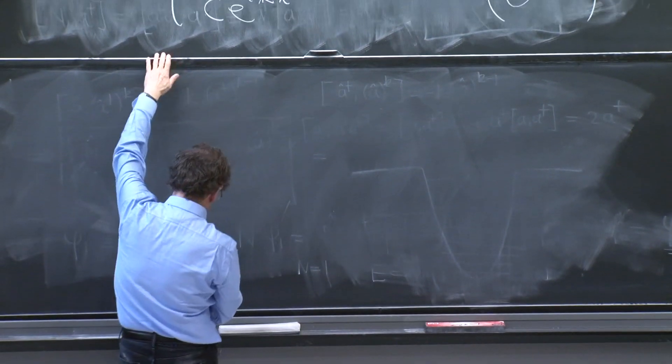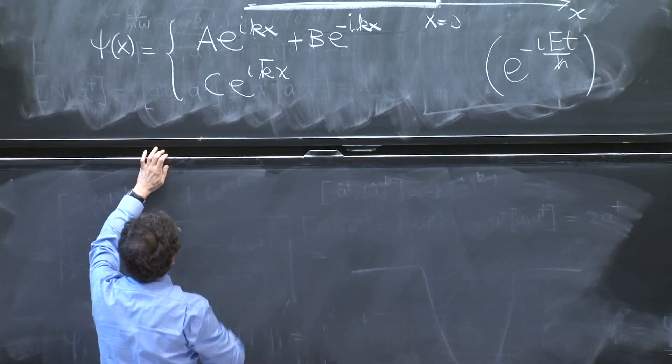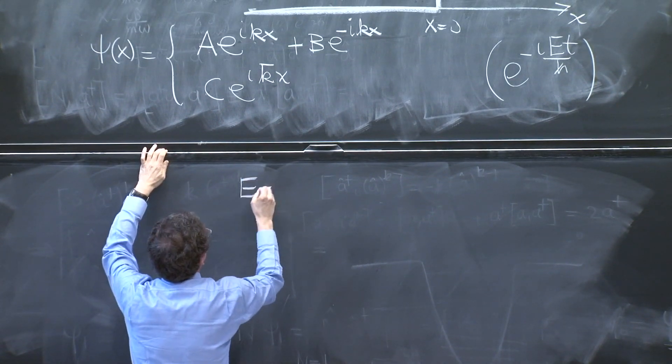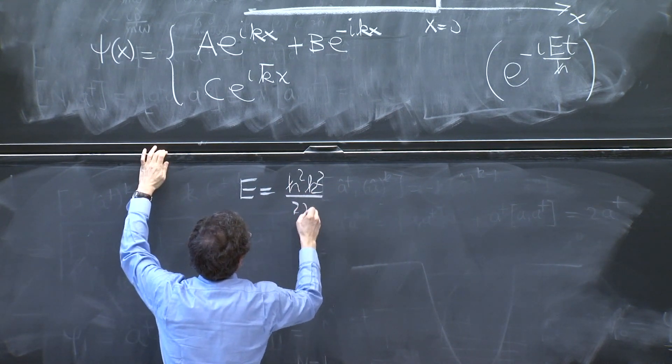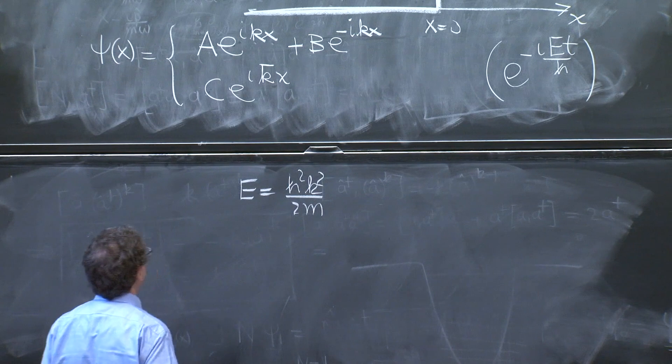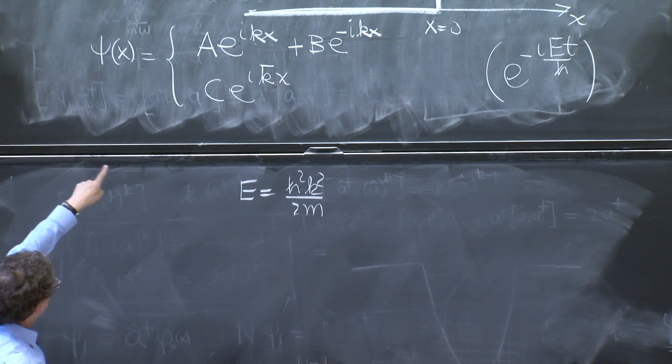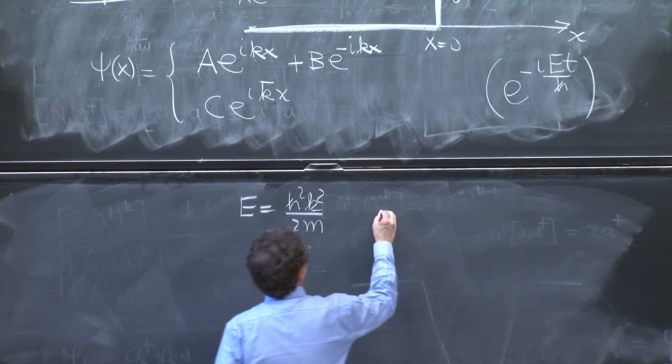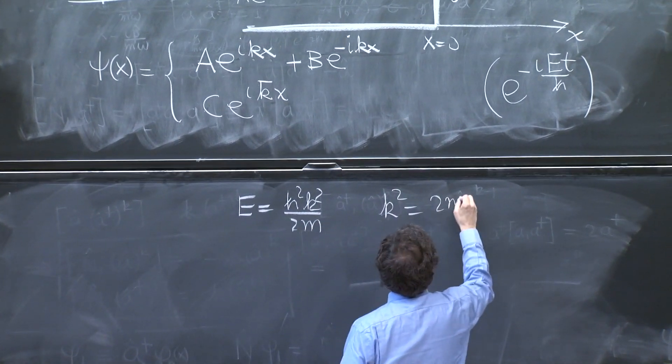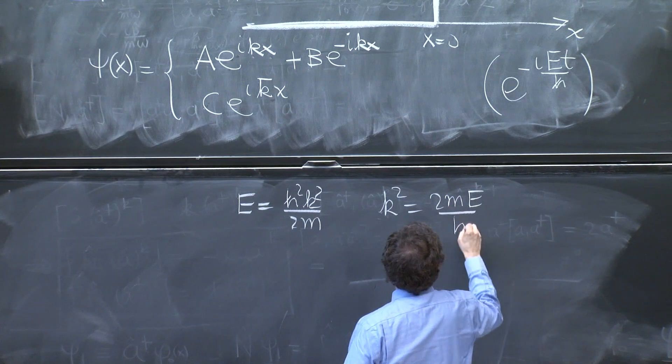What is k? Well, if you have energy E, you know that the energy is h squared k squared over 2m. You can look at the Schrodinger equation with zero potential over there. And therefore, k squared is also 2m e over h squared. It's a combination you've been seeing quite a bit.